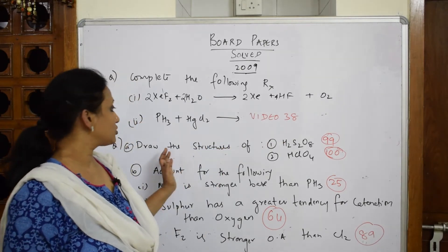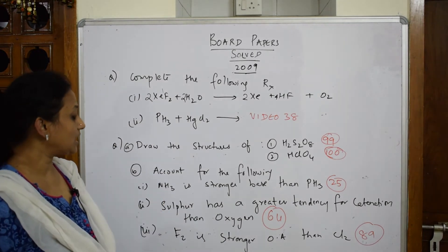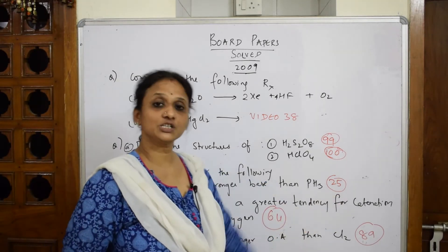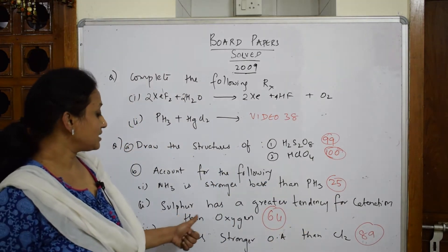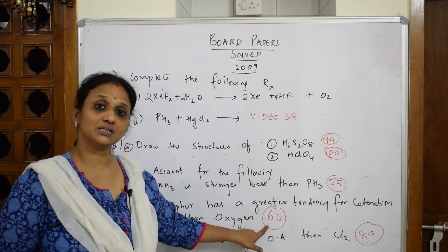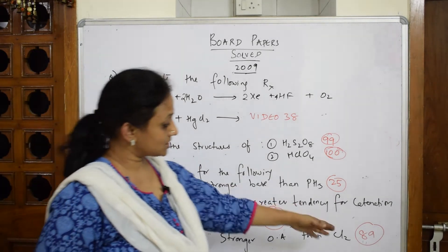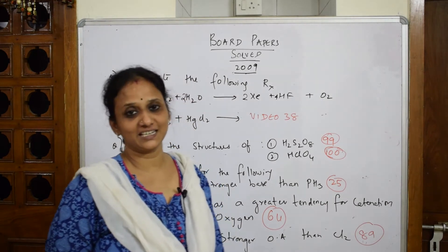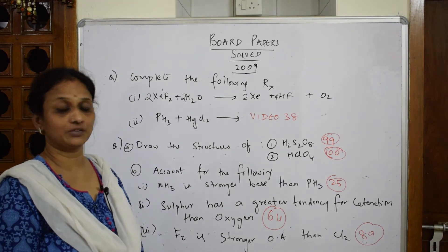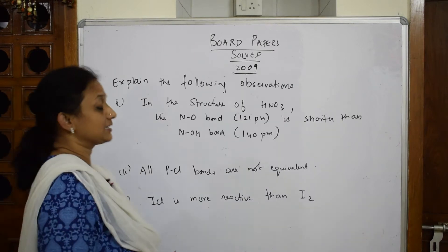Next question: phosphine plus mercury chloride (HgCl₂) — I did it in video number 38, and I drew both structures in videos 99 and 100. Next: account for why ammonia is a stronger base than phosphine — covered in video number 25. Sulfur has greater tendency for catenation than oxygen — done in video 64. Fluorine is a stronger oxidizing agent than chlorine — done in video 89. Almost all questions are covered; please go through the videos carefully.